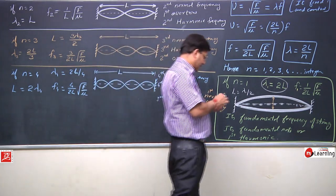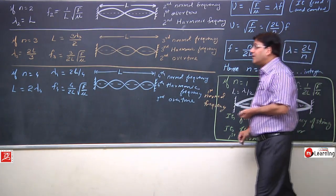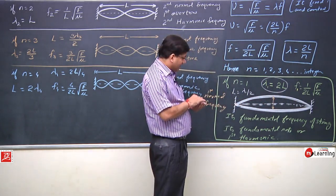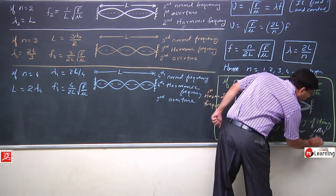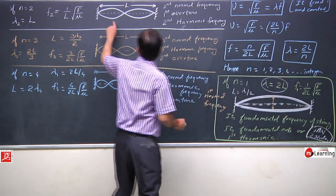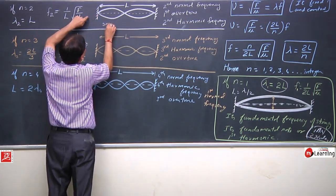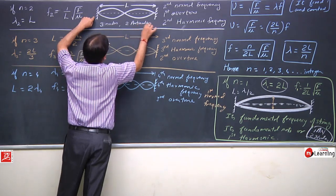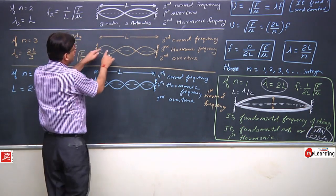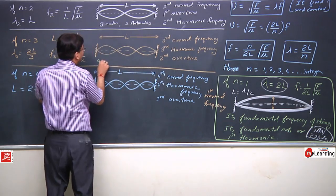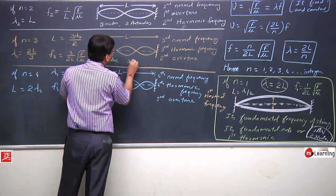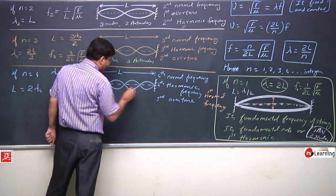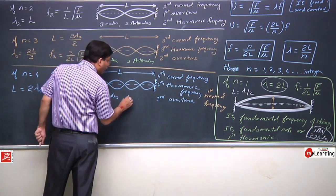Let us observe the nodes and antinodes in each case. For n=1: one antinode and two nodes. For n=2: two antinodes and three nodes. For n=3: three antinodes and four nodes. For n=4: four antinodes and five nodes. So as n increases, the counts of nodes and antinodes increase accordingly.